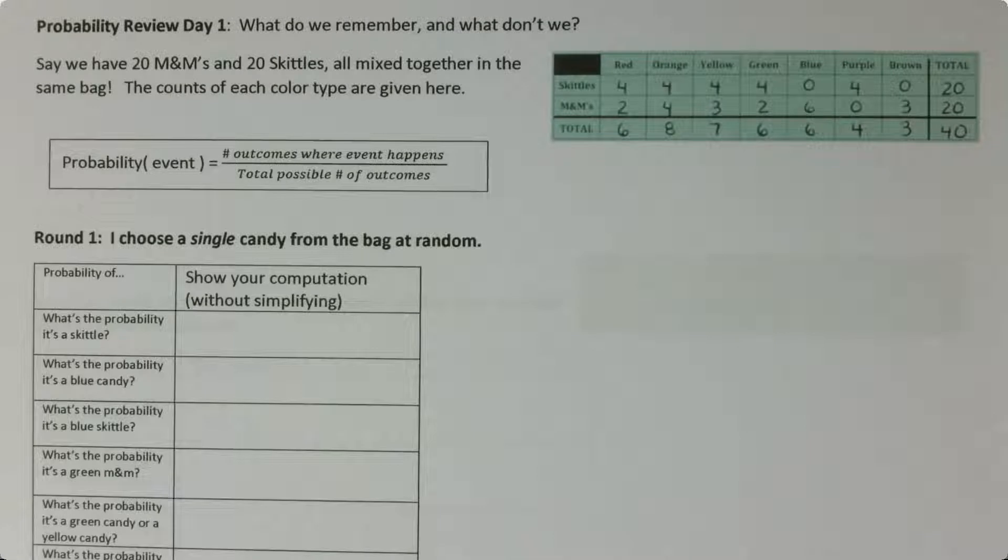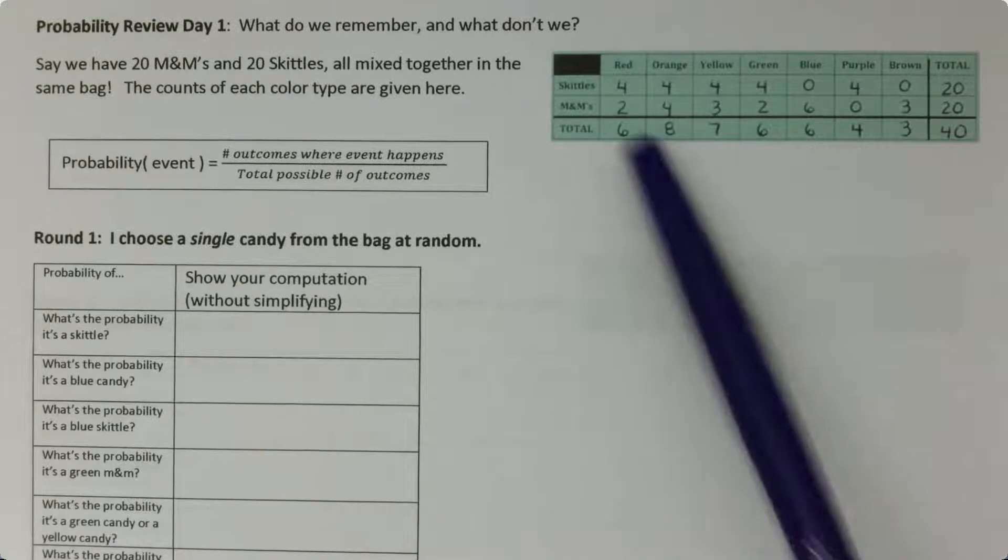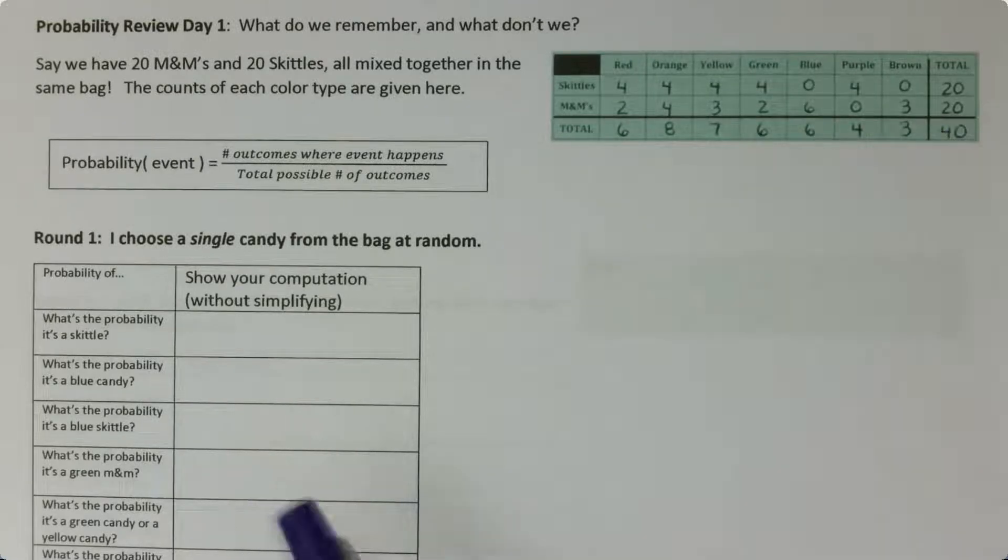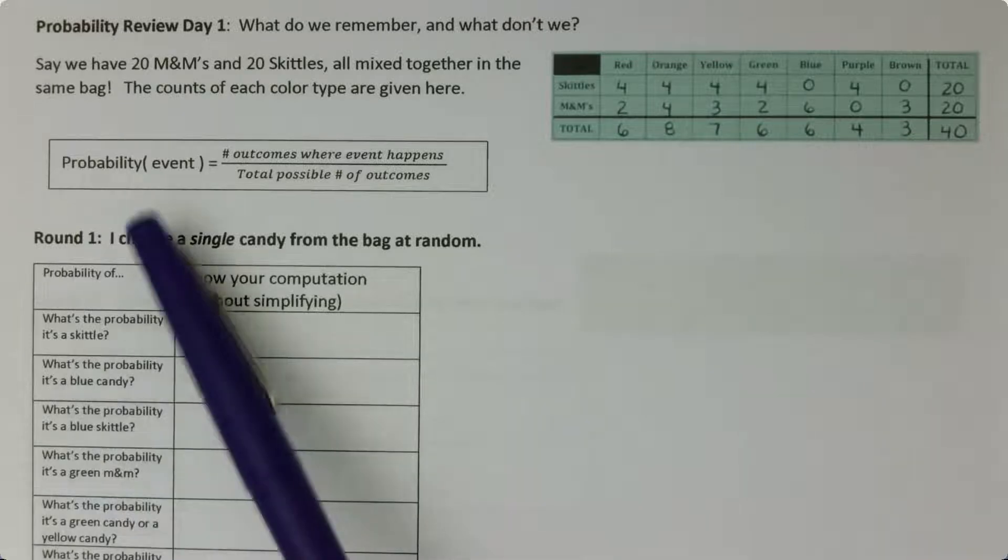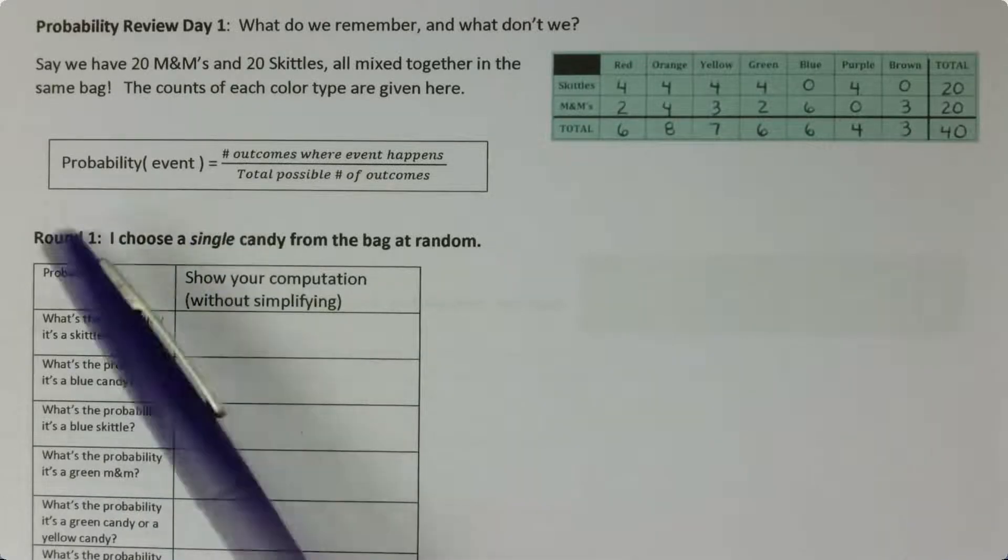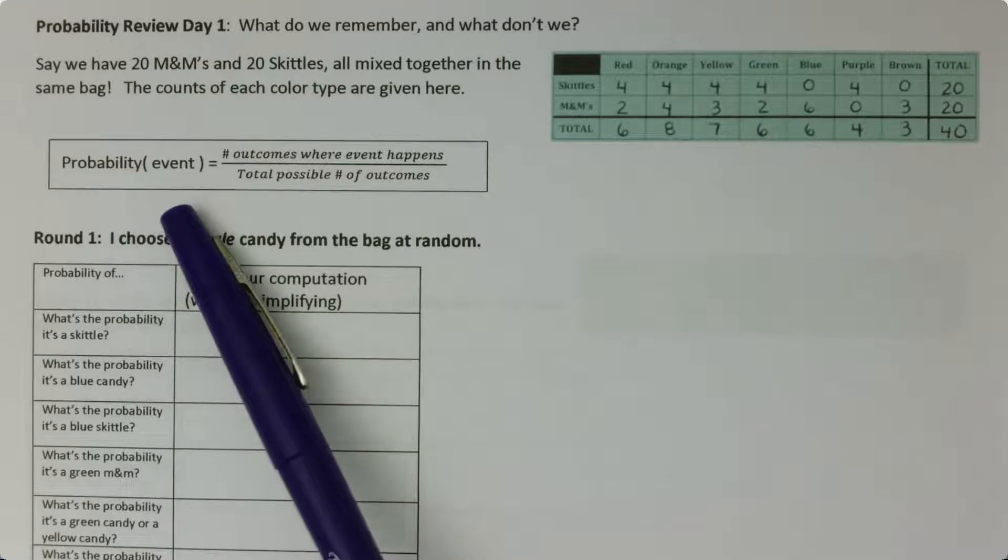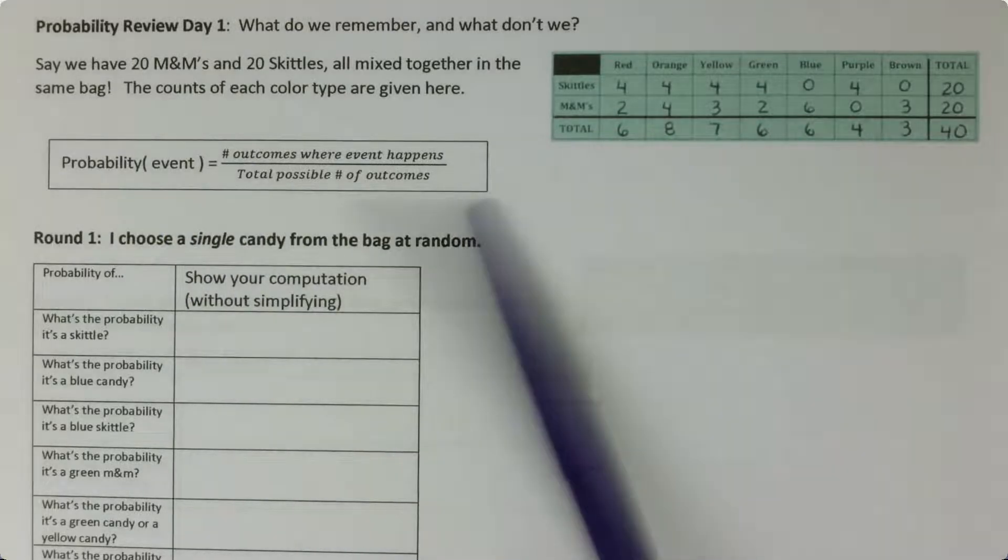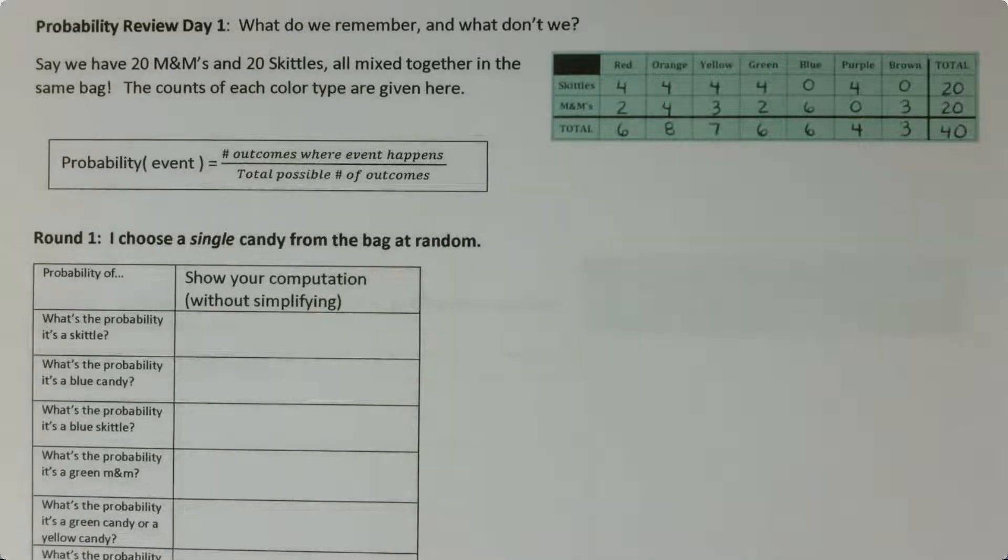So let's imagine we have mixed together 20 M&Ms and 20 Skittles together in a bag. Great plan! And the color distribution is shown here. For all of these problems it's going to boil down eventually to this equation. The probability of some particular event is going to be the number of outcomes where that event happens divided by the total possible number of outcomes.